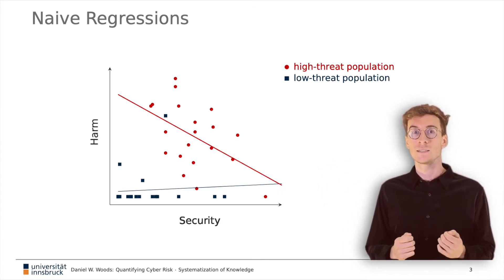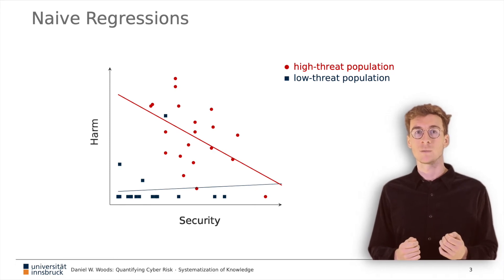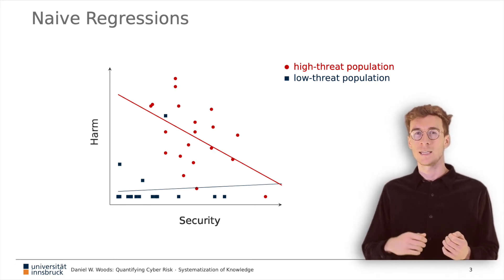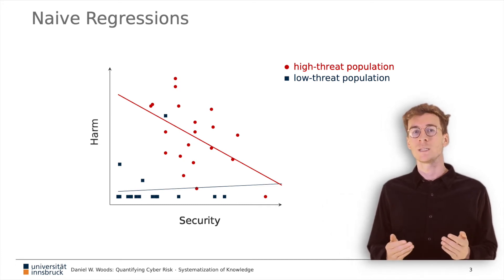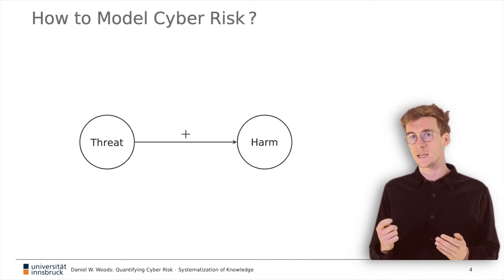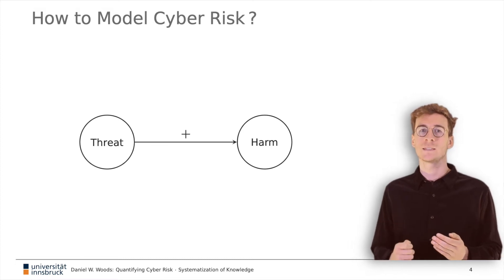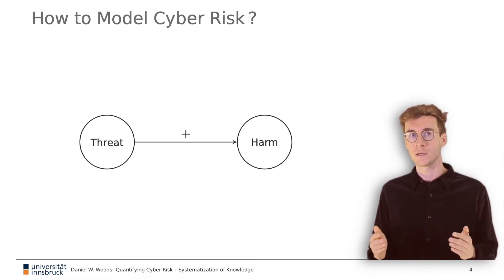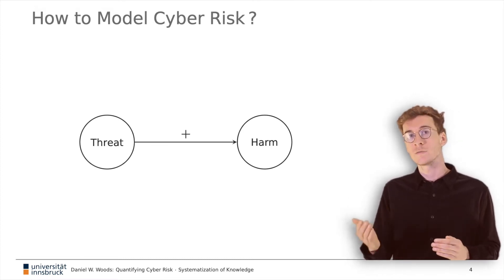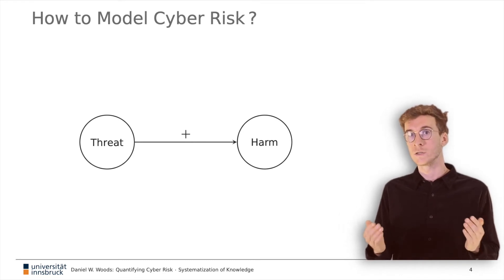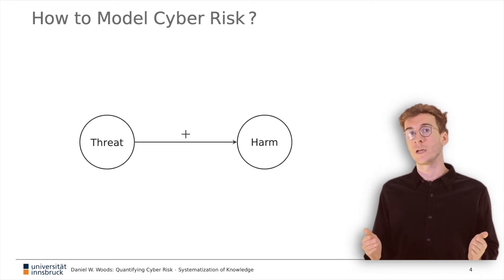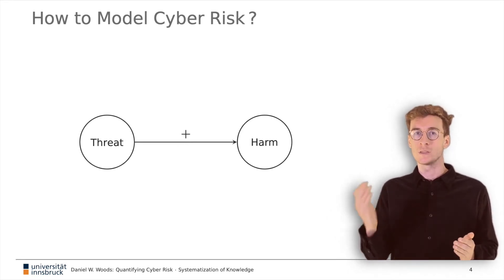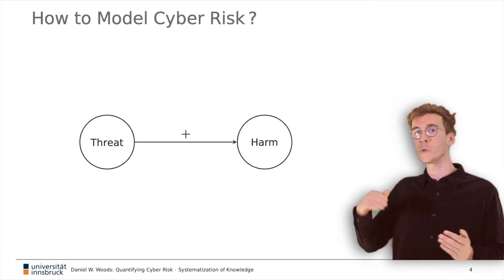This suggests a statistical model of cyber risk outcomes should include variables in addition to security. This follows because an active threat actor is the only necessary condition for harm to occur. Thus, the cause of harm is the threat actor, not the security level.